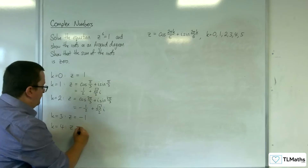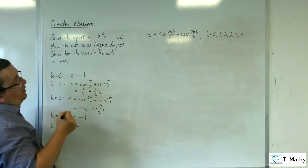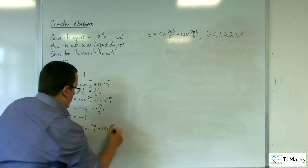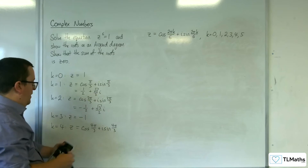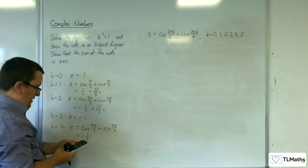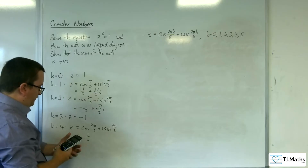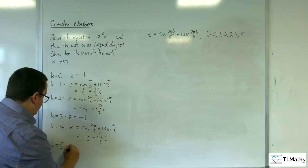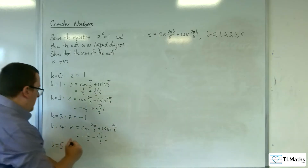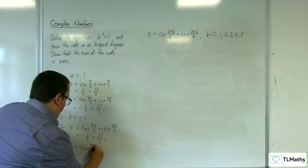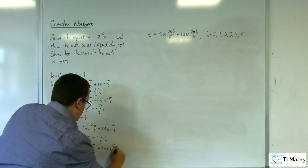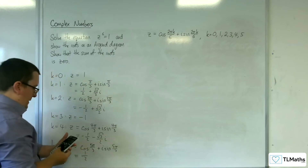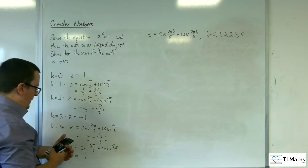When k is equal to 4, we get cosine of 8 pi over 6, so 4 pi over 3. Cosine of 4 pi over 3 is minus 1 half, and sine of 4 pi over 3 is minus root 3 over 2. Finally, when k is 5, we get 10 pi over 6, so 5 pi over 3. Cosine of 5 pi over 3 is 1 half, and sine of 5 pi over 3 is minus root 3 over 2.